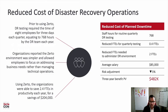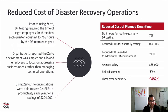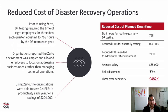We also conducted a study called the Total Economic Impact of the Zerto IT Resilience Platform. Prior to using Zerto, DR testing required eight employees for three days each quarter — totaling 768 hours by the DR team. Using Zerto, organizations were able to save 2.4 FTEs in productivity each year for savings of $204,000. Zerto doesn't just help you reduce the capital cost of a secondary site — it reduces the amount of time and resources your organization needs to dedicate to DR, by consolidating multiple use cases and capabilities into a simple, easy-button solution.